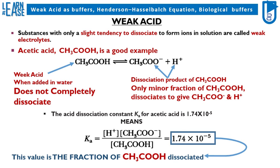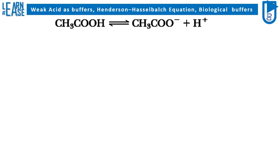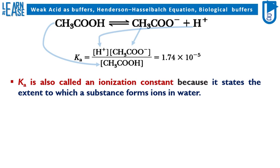The value of Ka, 1.74 × 10⁻⁵, is the fraction of CH3COOH dissociated. The reaction for dissociation of CH3COOH in water is shown, and the concentrations of CH3COO-, H+, and undissociated CH3COOH are placed in the equation to get the value of Ka for CH3COOH, which is 1.74 × 10⁻⁵. Ka is also called an ionization constant because it states the extent to which a substance forms ions in water.